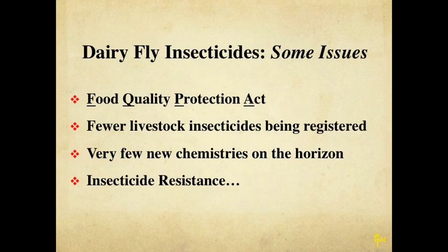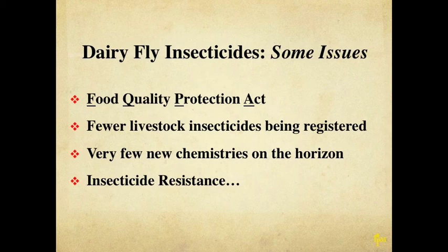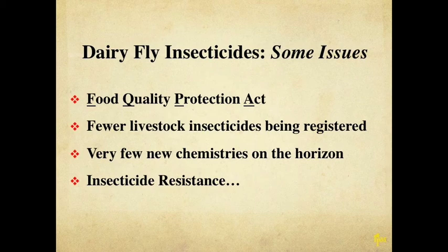Some additional factors to consider involve insecticide use. The Food Quality Protection Act was brought into play by the federal government in 1996 and was designed to look at pesticides that would have potential harm for human health and the environment. As a result of close scrutiny and additional testing required, a number of materials that were once widely available were no longer put onto the market. We have fewer materials now available than we once had, fewer livestock insecticides being sold, fewer options, and very few new chemistries on the horizon. An additional factor worth considering is the discovery of insecticide resistance, a very common thing for some of our fly species.